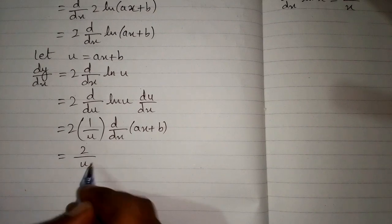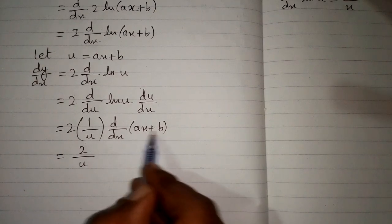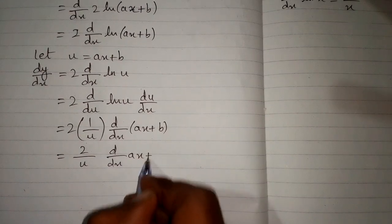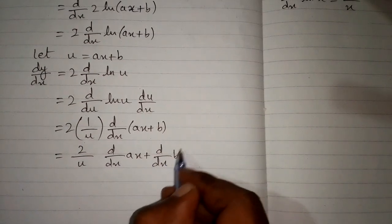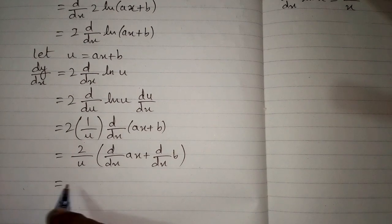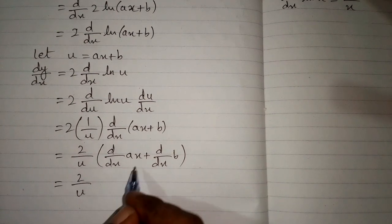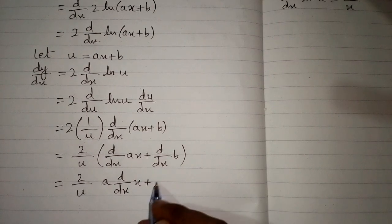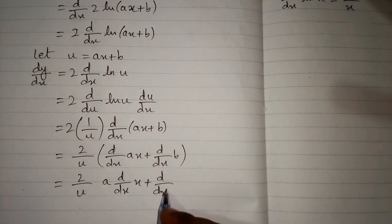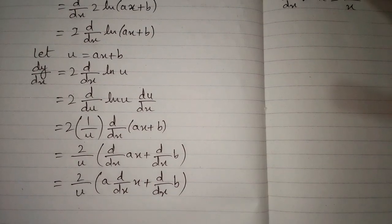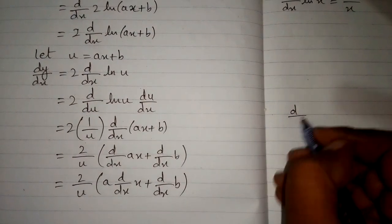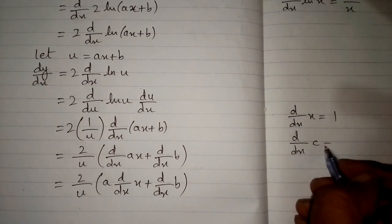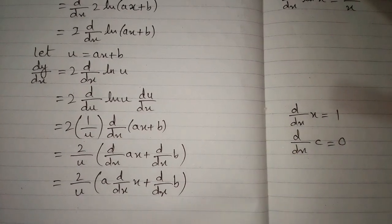This can be written as 2 upon u, and we apply the derivative to both terms: d/dx of ax plus d/dx of b. We get a times the derivative of x plus the derivative of b. The derivative of x is 1 and the derivative of any constant is 0, so the derivative of b is 0.